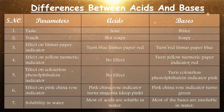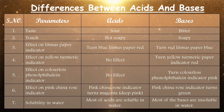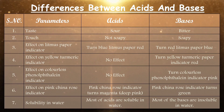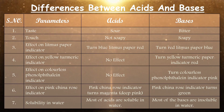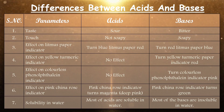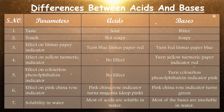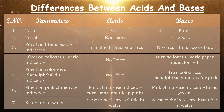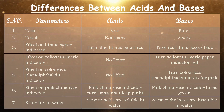Number four: effect on yellow turmeric indicator. Acids show no effect on turmeric paper, but bases turn the yellow turmeric paper red. Number five: effect on colorless phenolphthalein indicator. Acids show no effect on phenolphthalein indicator, but basic solutions turn colorless phenolphthalein indicator pink.